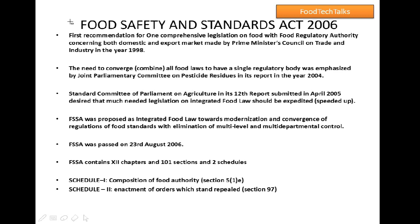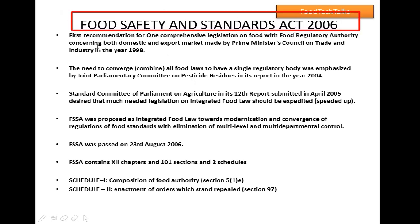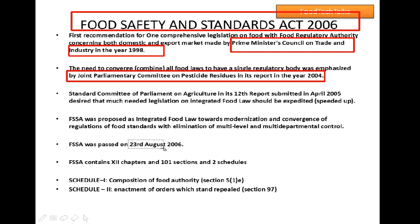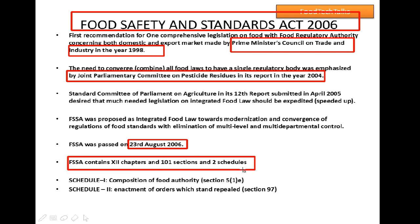Moving on to the next slide, we will understand how the Food Safety Standards Authority 2006 came into force. The first initiative was taken by the Prime Minister's Council on Trade and Industry in the year 1998. In 2004, the need for all food laws to have a single regulatory board was emphasized by the Joint Parliamentary Committee on Pesticide Residue. Finally, the Food Safety Standards Act was passed on 23rd August 2006. The Act contains 12 chapters, 101 sections and 2 schedules.